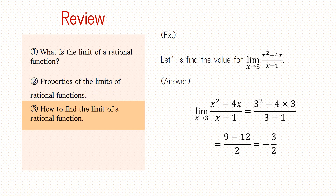In the example shown, since the rational function x squared minus 4x over x minus 1 is defined when x equals 3, we can use the properties of limits of rational functions. x approaches 3, so if we substitute 3 for x, we know the limit of the rational function x squared minus 4x over x minus 1 is negative 3 over 2. If we use the properties of limits of functions in this way, we can find the limit of rational functions. That concludes this lesson.